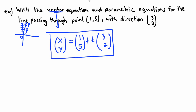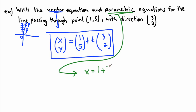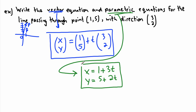Now, if I want to write the parametric equations, I can just write down two equations from this. So x equals 1 plus t times 3, in other words x equals 1 plus 3t. Another equation: y equals 5 plus t times 2, so y equals 5 plus 2t. There are my parametric equations.